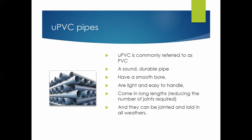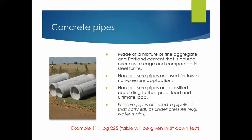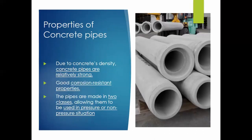UPVC (PVC) pipes are sound, durable, have a smooth bore, are light and easy to handle, come in long lengths reducing the number of joints required, and can be jointed and laid in all weather. Concrete pipes are made of a mixture of fine aggregates and Portland cement poured over wire mesh. They are usually non-pressure pipes but can be used as pressure pipes. Due to concrete density, they have good corrosion resistance and come in two classes: pressure and non-pressure.